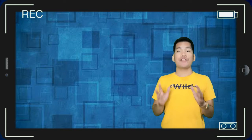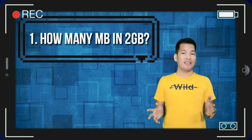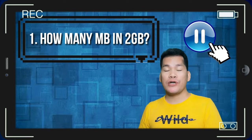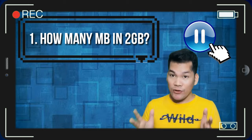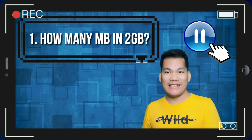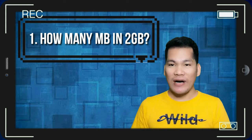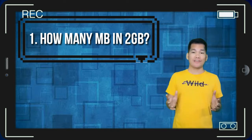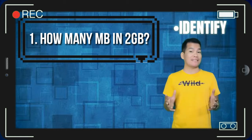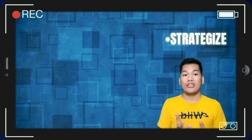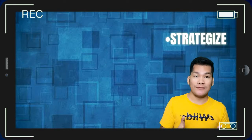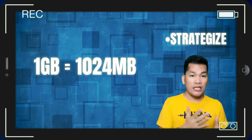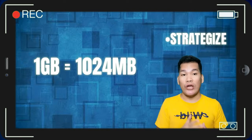Now for the first question: how many megabytes are in 2 gigabytes? You can pause the video for a second to answer on your own, and later on let us check if we have the same answer. So to answer this question, we are going to follow our technique. What are we looking for? We are looking for the number of megabytes in 2 gigabytes. For strategize, always go back to our formula, and we know that one gigabyte equals 1024 megabytes.